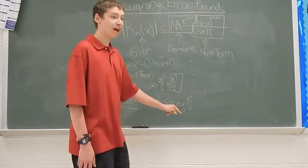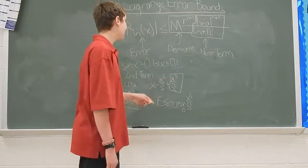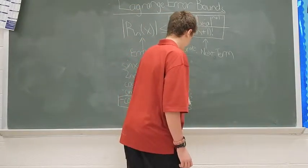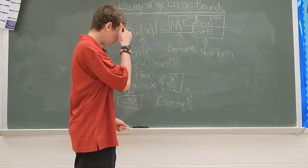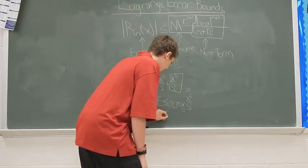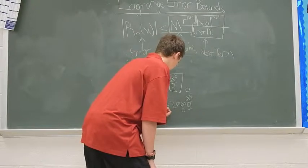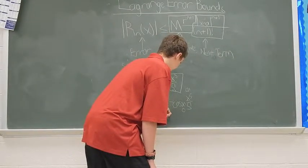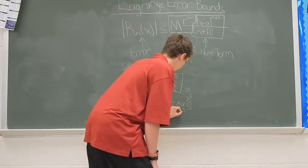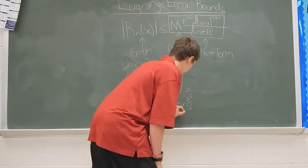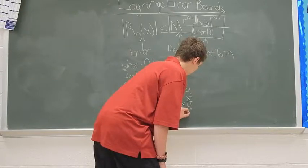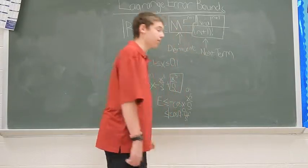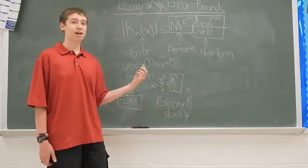And then x to the fifth over 5 factorial is going to be the greatest at x equals 0.1. So, your error is going to be less than or equal to the absolute value of negative cosine of 0 times 0.1 to the fifth over 5 factorial. Plug that into your calculator and you'll get the error.